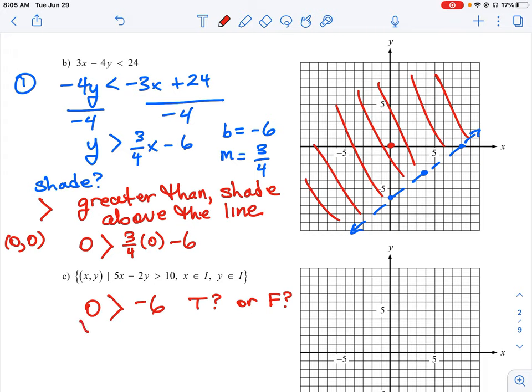Okay, so this expression—zero is greater than negative six—that is true. Therefore, we have shaded the right region on that side of the line.